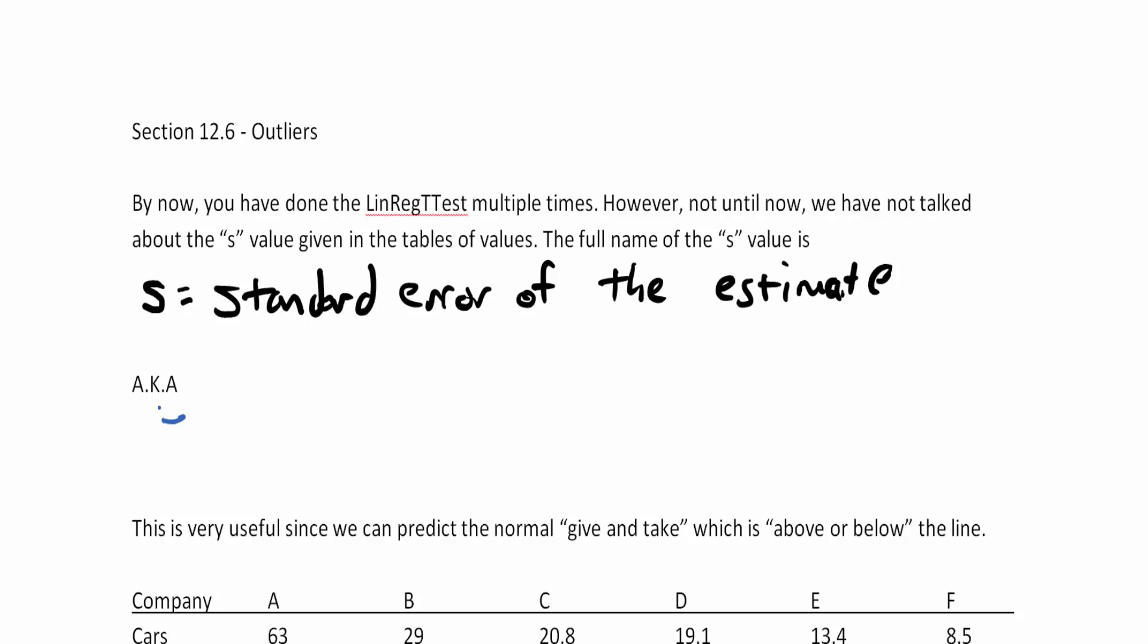This goes by two different abbreviated names. One is s sub est, the standard error of the estimate. Sometimes I see books with a capital S and the little subscript est.